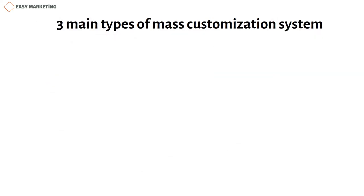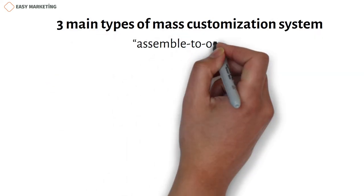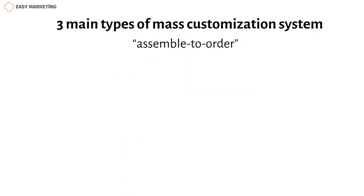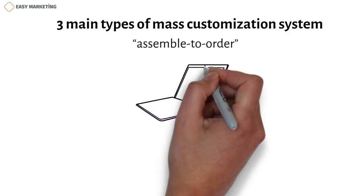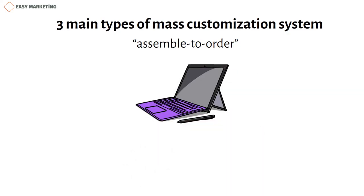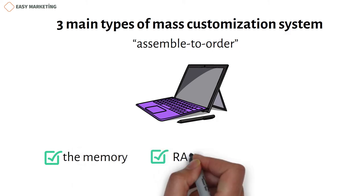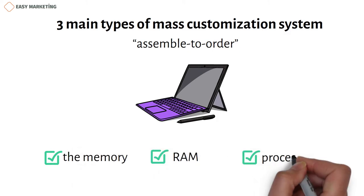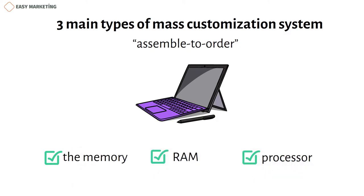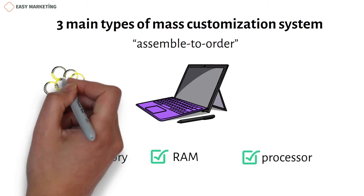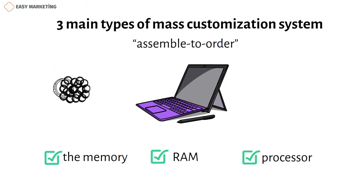The second type is called assemble-to-order. An example of this is the sale of computers. For example, when you buy a computer from certain companies, you can change the memory, RAM, processor, etc. Of course, the price may increase or decrease according to the changes you make.